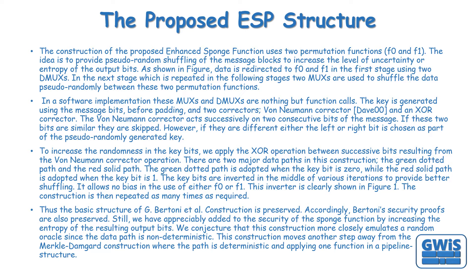The von Neumann corrector acts successively on two consecutive bits of the message. If these two bits are similar, they are skipped. However, if they are different, either the left or right bit is chosen as part of the pseudo-randomly generated key. To increase the randomness in the key bits, we apply the XOR operation between successive bits resulting from the von Neumann corrector operation.